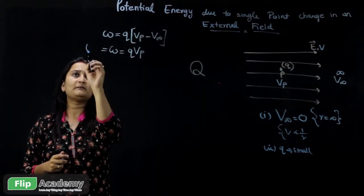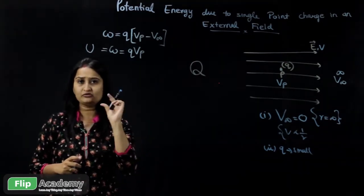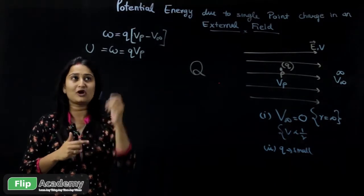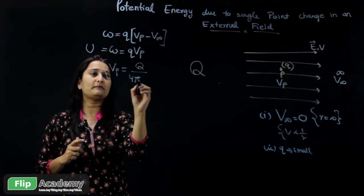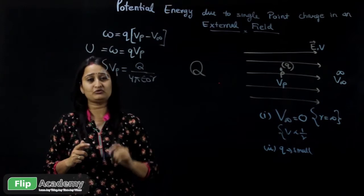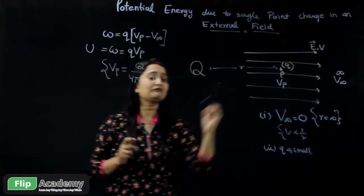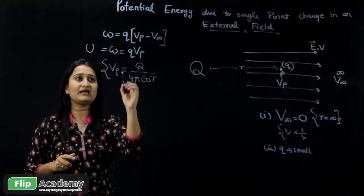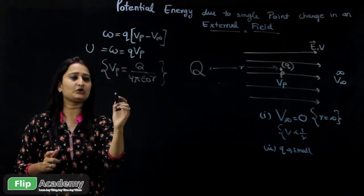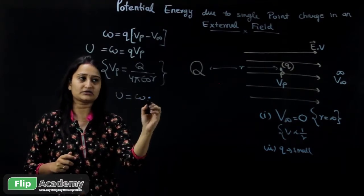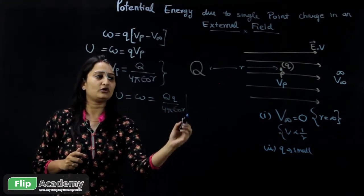The potential energy is the same as the work done. Now, the formula for Vp is Q upon 4πε₀, and the distance between the source charge and point P is R. So the potential at point P is Q/(4πε₀R). Substituting this formula, the potential energy is given as the work done, which equals small q times Q upon 4πε₀R. This is the formula for potential energy for a single point charge in an external field.